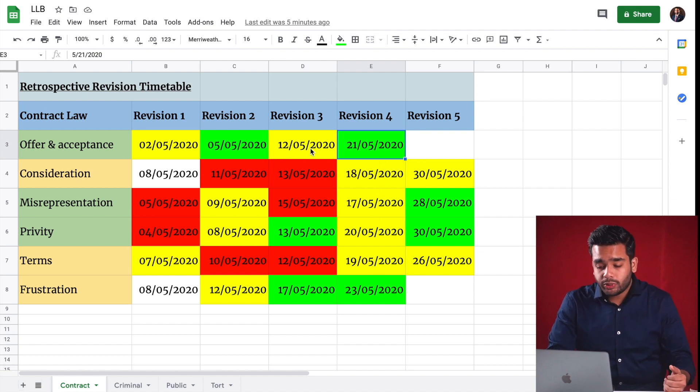Your ultimate goal is to reach green for all chapters before the exam. Even if you don't, you know very well before the exam day by looking at the table which chapters you need to focus more on to do well. Amazing technique right?